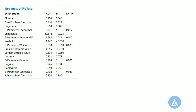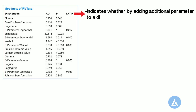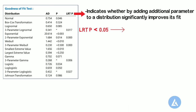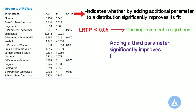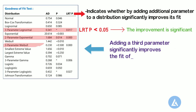The p-value for the likelihood ratio test (LRT) indicates whether adding an additional parameter to the distribution significantly improves its fit. An LRT p-value less than 0.05 suggests that the improvement is significant. Adding a third parameter significantly improves the fit of the lognormal distribution (LRT p-value 0.017), the Weibull distribution (LRT p-value 0.000), the Gamma distribution (LRT p-value 0.006), and the loglogistic distribution (LRT p-value 0.027).